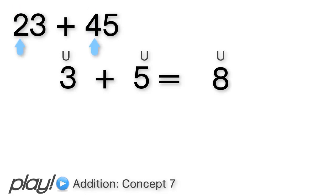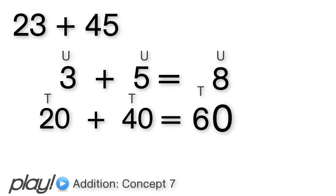Next our tens, we have 20 plus 40. This is the same as 2 tens plus 4 tens, which gives us 6 tens or 60.